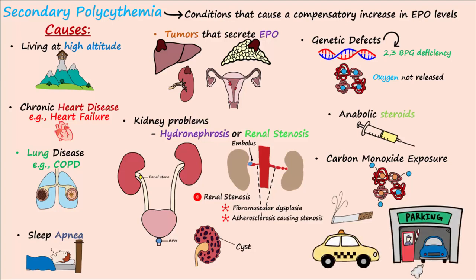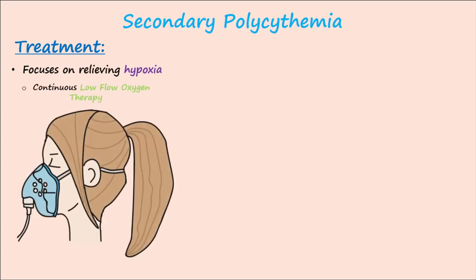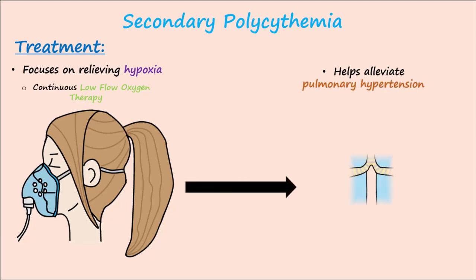Treatment for secondary polycythemia focuses on relieving the hypoxia. Continuous low-flow oxygen therapy may be used to help correct the hypoxia. This treatment also helps alleviate pulmonary hypertension, which is important to delay the onset of lung or heart failure.